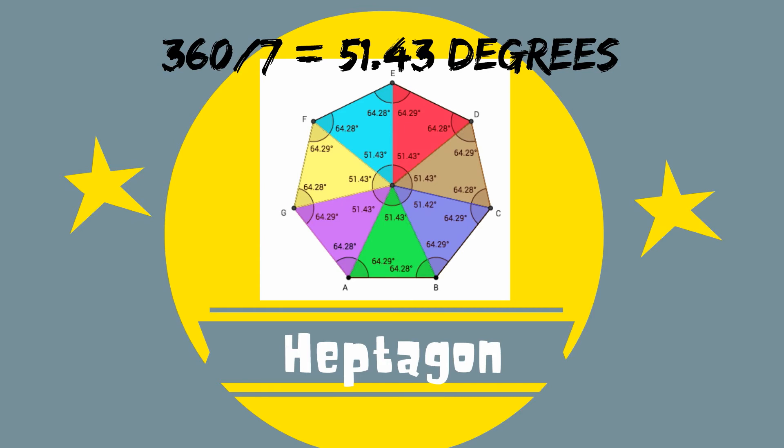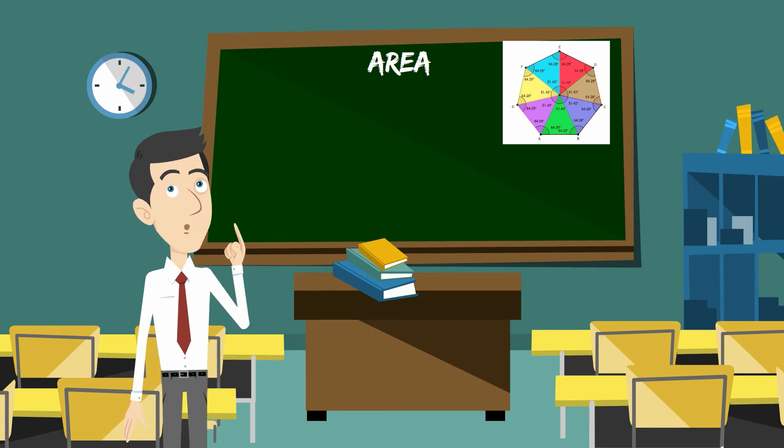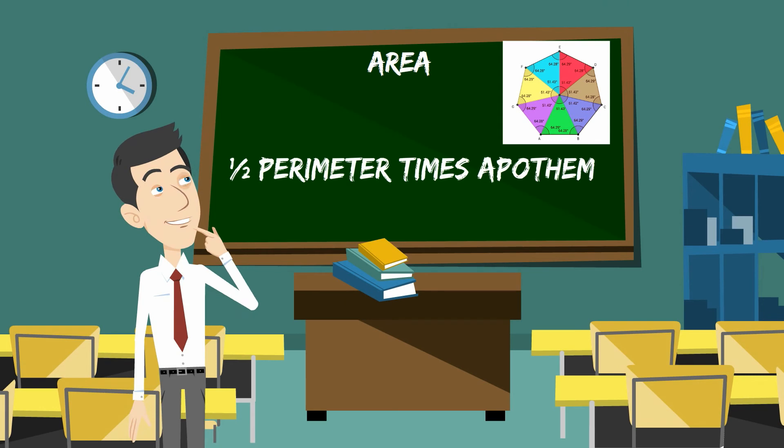Next, you can find the area of a Heptagon by using 1/2 times perimeter times the apothem.